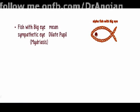We can understand alpha receptor effects with the help of a trick. We have a fish made up of rope - a big eye fish. This big eye means that activation of alpha receptors results in bigger eye, meaning dilation of the pupil, known as mydriasis.